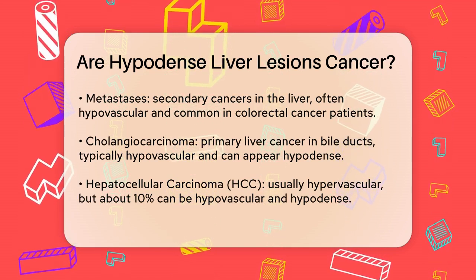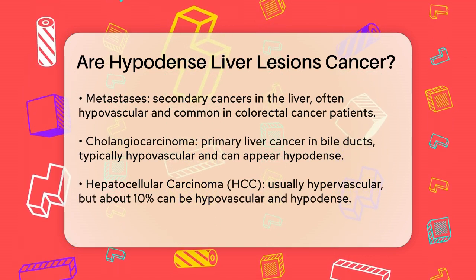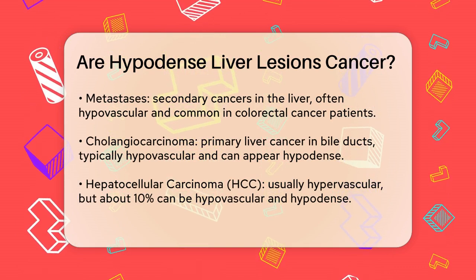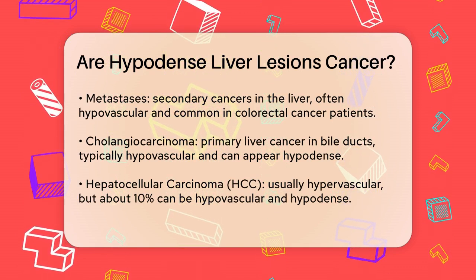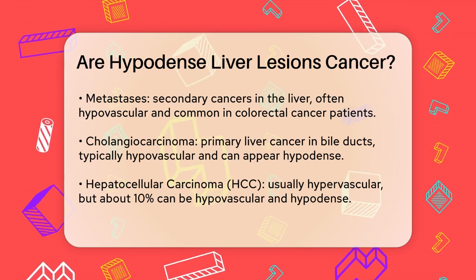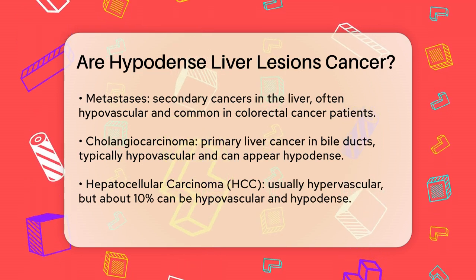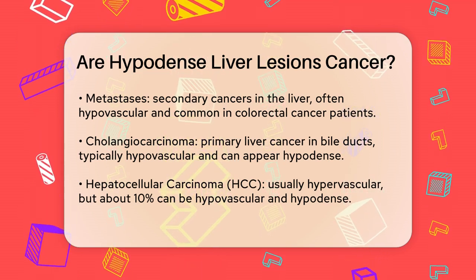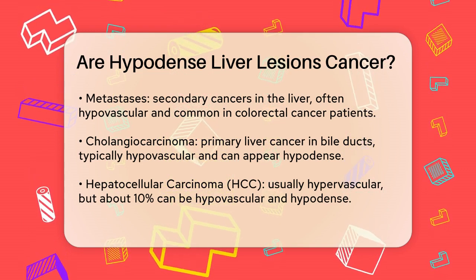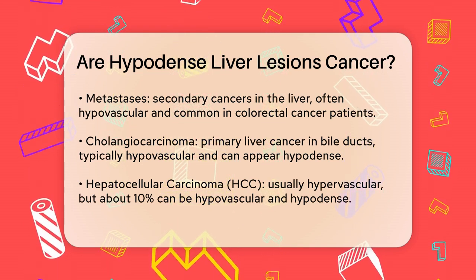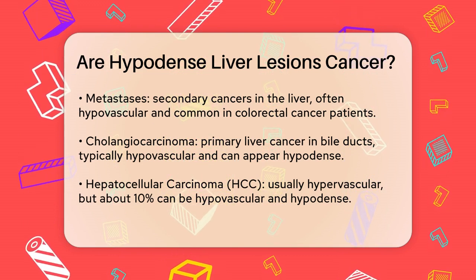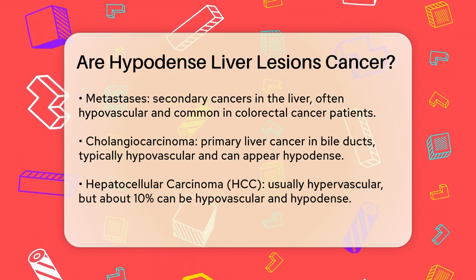Hypodense lesions can be either benign or malignant. Here are a few examples. Metastases are secondary liver cancers that have spread from another part of the body. Most metastases to the liver are hypovascular and appear as hypodense lesions on CT scans. They are more common than primary liver tumors and are often seen in patients with cancers like colorectal cancer.